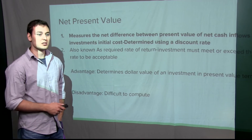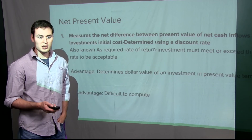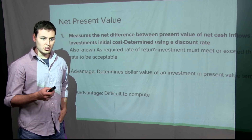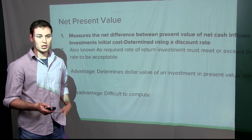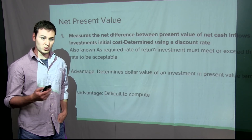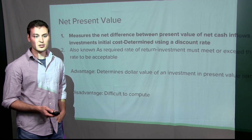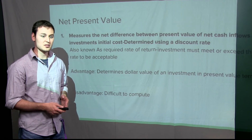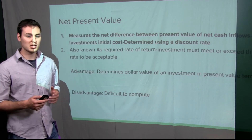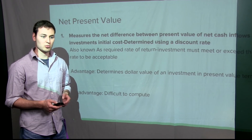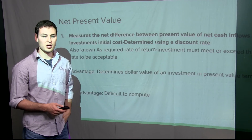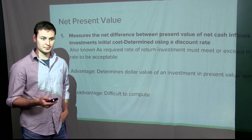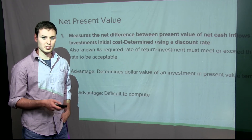Our third measure is net present value. This measures the net difference between the present value of net cash inflows and our initial investment. To determine the present value of cash flows, we use a discount rate, often referred to as the required rate of return. If the investment meets or exceeds this return, the project is deemed acceptable. The advantage is that it determines the dollar value of future cash flows and brings it back to present day. The disadvantage is that it's difficult to compute.